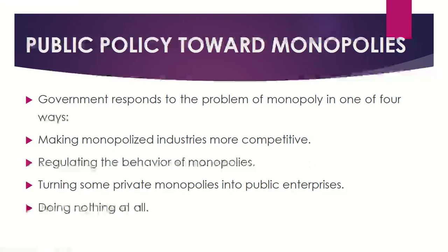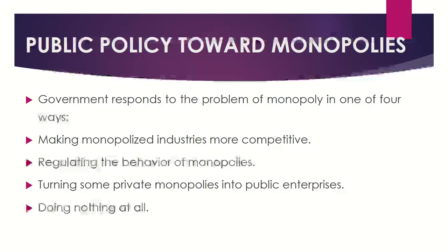Moving to public policy toward monopolies: government responds to the problem of monopoly in one of four ways. The first is making monopolized industries more competitive. The second is regulating the behavior of monopolies. The third is turning some private monopolies into public enterprises. The last one is doing nothing at all. We will explain all four ways in detail.